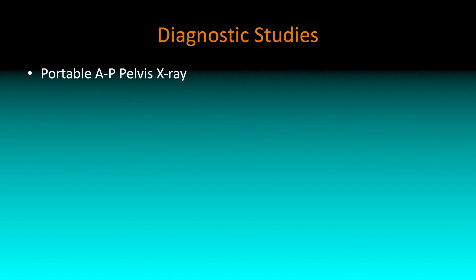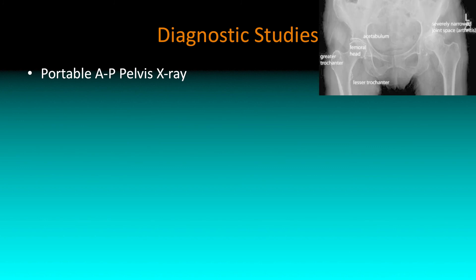When you're suspecting these, in the trauma bay you're probably going to get your portable AP pelvis. You might see the femoral head displaced posteriorly or anteriorly. Now, the AP pelvis doesn't always catch it, so what else can you look for on the x-ray?